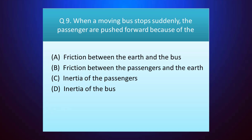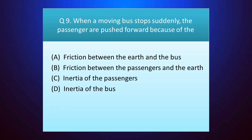Question number nine: when a moving bus stops suddenly, the passengers are pushed forward because of the — your time starts. The answer is option C — inertia of the passenger.